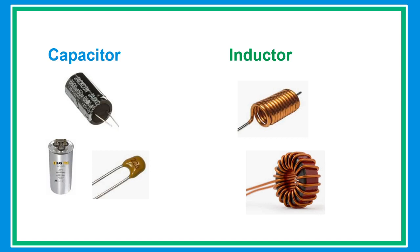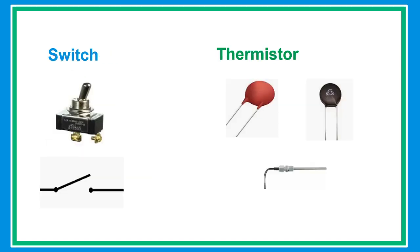An inductor resists changes in the flow of electric current through it. A switch is a device for making and breaking the connections in a circuit. A thermistor is a resistance thermometer — a resistor whose resistance is dependent on temperature.